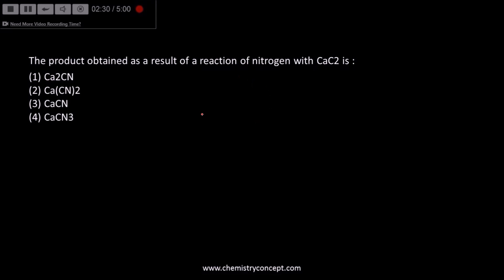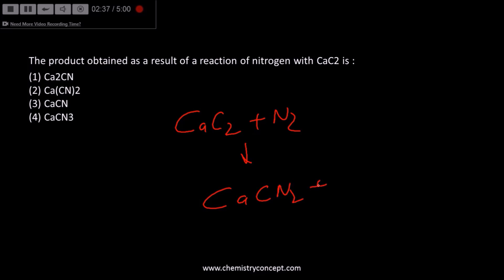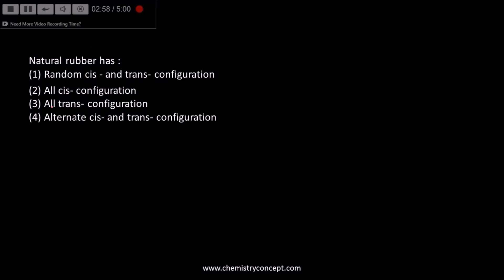When CaC2 reacts with nitrogen, it forms CaCN2 plus carbon. This question was noted as rejected. Natural rubber is made of cis-isoprene monomers — all the monomers are arranged in cis conformation.